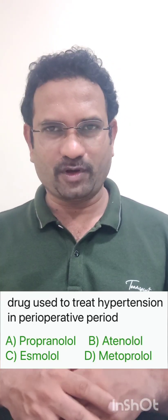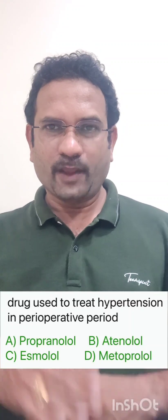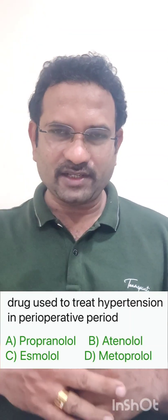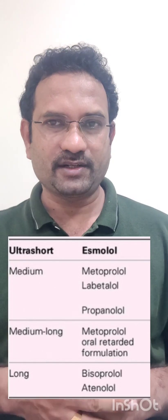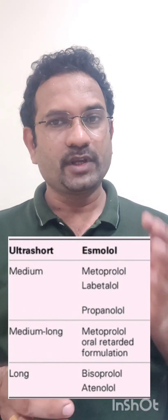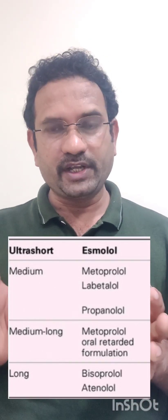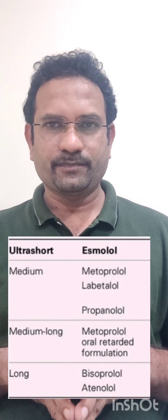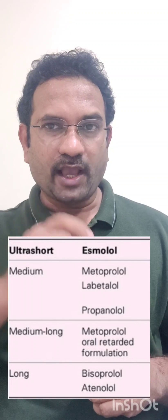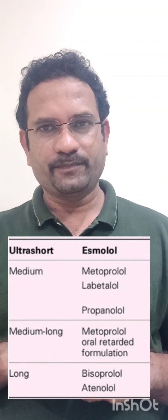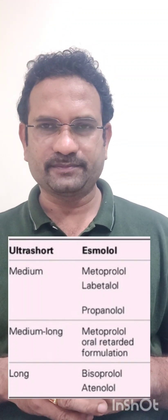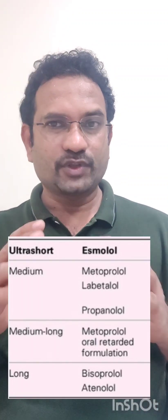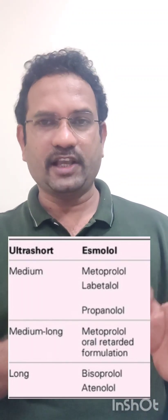All of them are beta blockers. When you look at the kinetics, out of all four, atenolol is the longest acting drug — it acts from 2 to 20 hours. The ultra-short acting drug is esmolol, which acts only for 10 minutes. So the answer is esmolol.